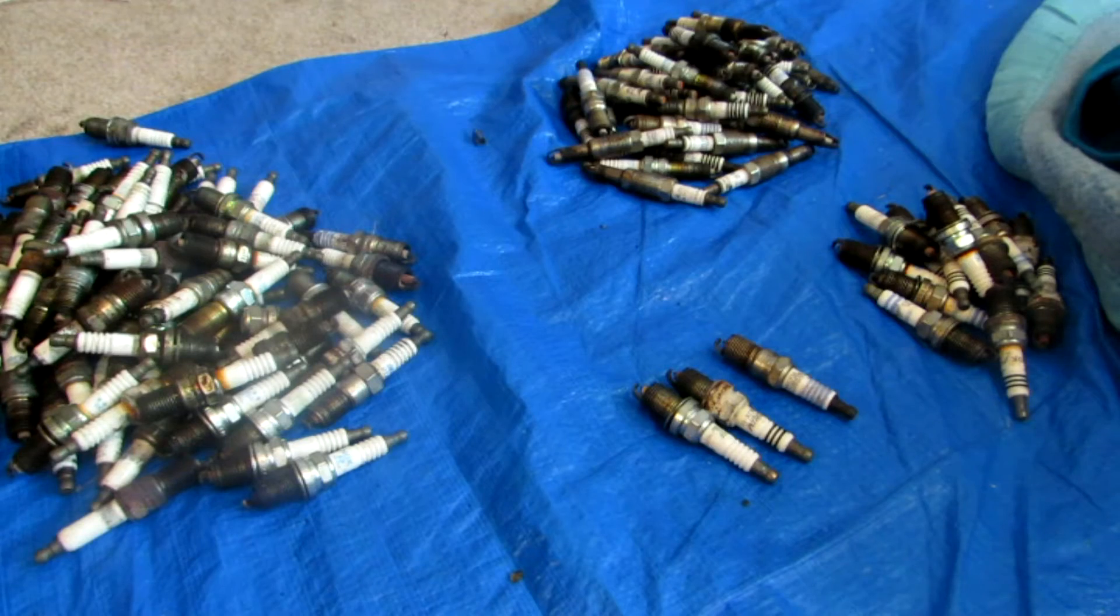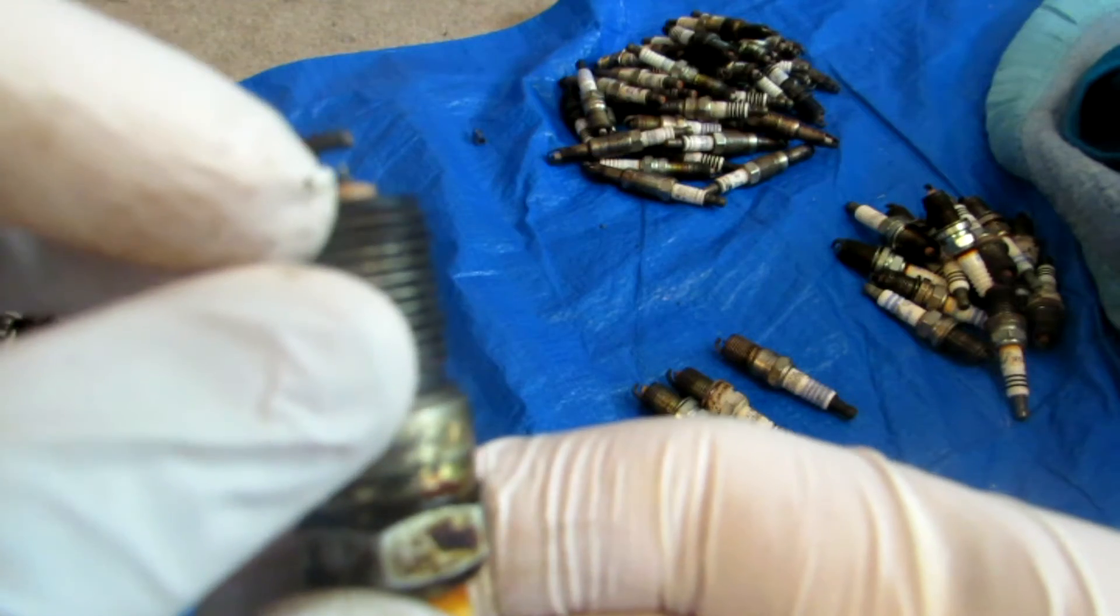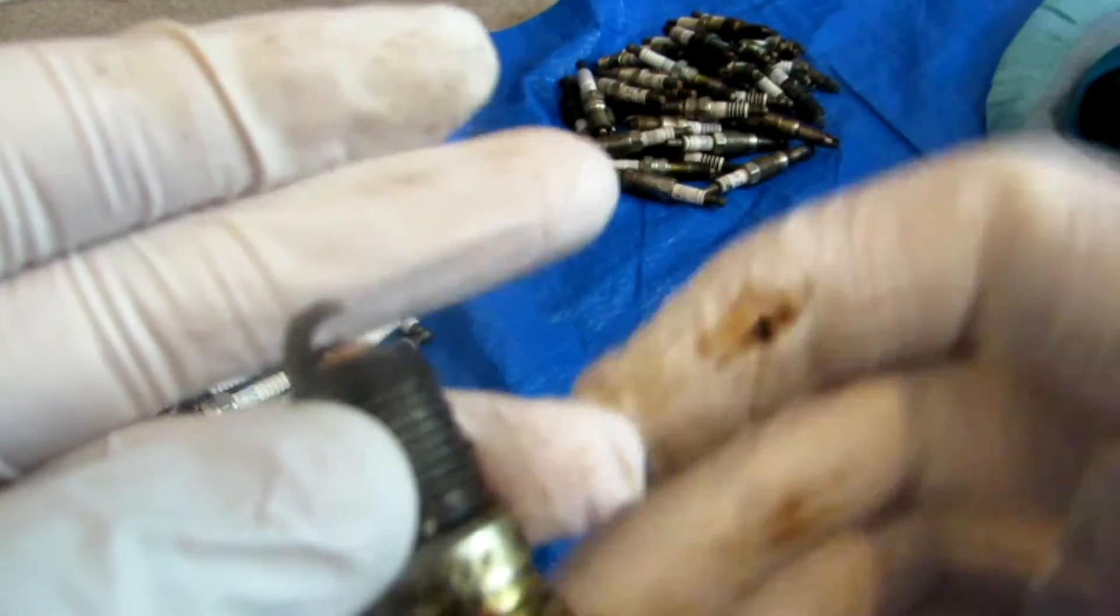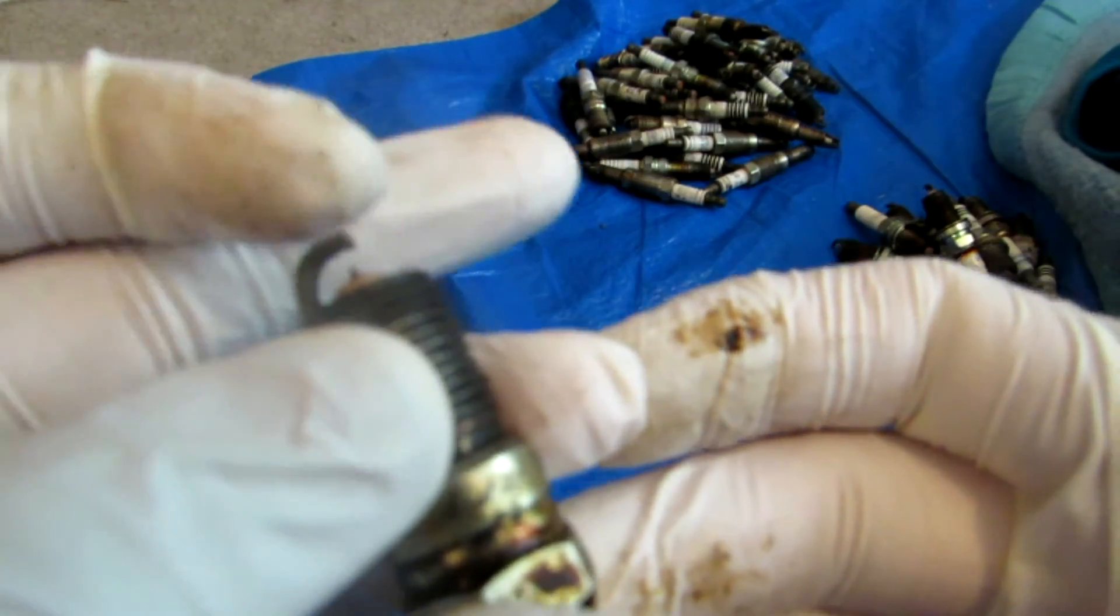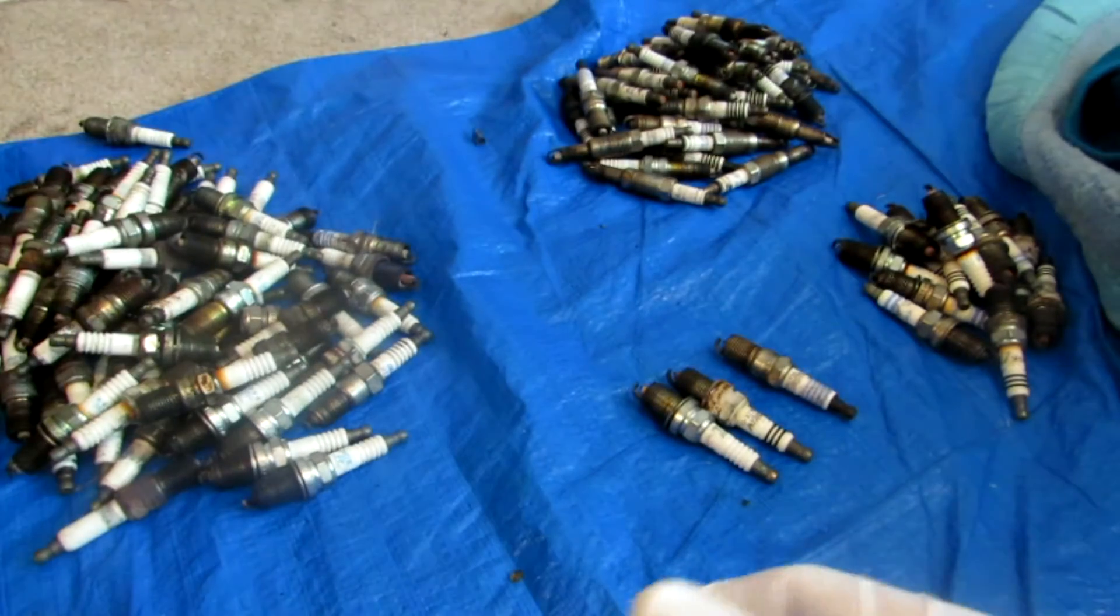Once they have been separated into piles, we can chop off the precious metals. The pointy tip has Platinum or Iridium as mentioned previously, and then the top piece of steel also has a small Platinum or Iridium disc. Both of these pieces can be chopped off of each spark plug and placed in a small container.